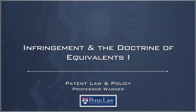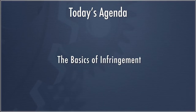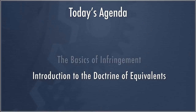This is Lecture 14, Infringement and the Doctrine of Equivalence, Part 1. The agenda for this lecture is to first cover the basics of infringement, just so that we're all on the same page as to what patent infringement means, how it operates. This is the relatively straightforward, traditional literal infringement that we'll talk about. And then we'll move on to the Doctrine of Equivalence, which is the more important and more complicated part, and the one that we're going to spend most of our time over the next few lectures on.